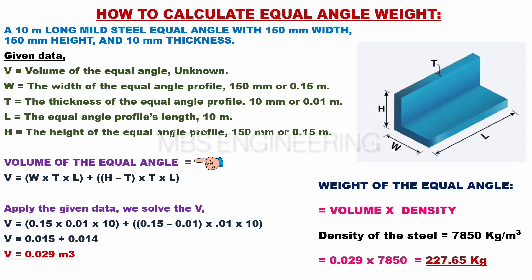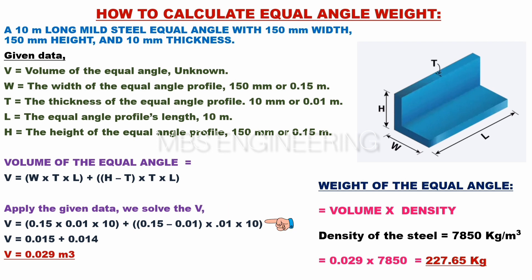Next, we learn how to calculate the volume of the equal angle. V equals W×T×L plus (H minus T)×T×L. Applying the given data, we solve for V: V equals 0.15×0.01×10, plus (0.15 minus 0.01)×0.01×10. V equals 0.015 plus 0.014. V equals 0.029 cubic meters. So the volume of the equal angle is 0.029 cubic meters.